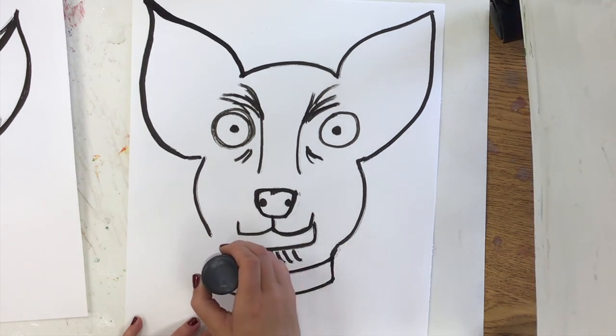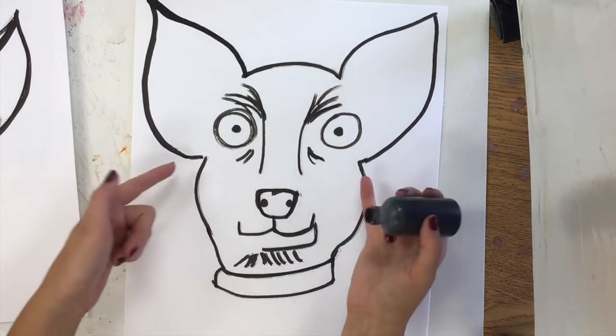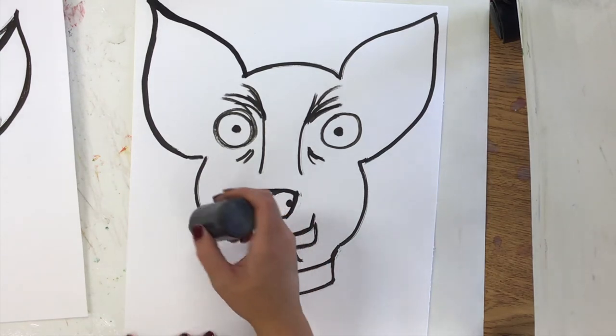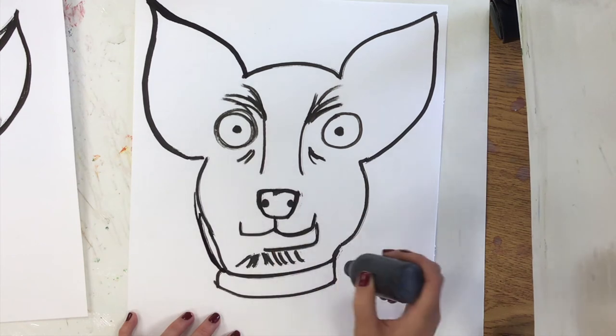Now, notice how both sides of my chihuahua aren't exactly the same. It's okay. It's not a big deal. I could go in and add another texture line to even it out on both sides. Whatever you want to do.